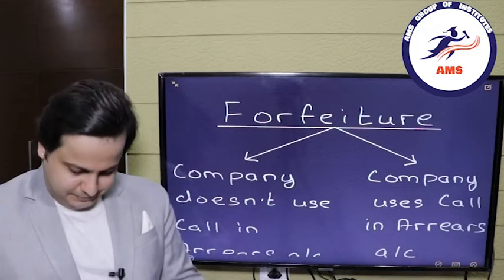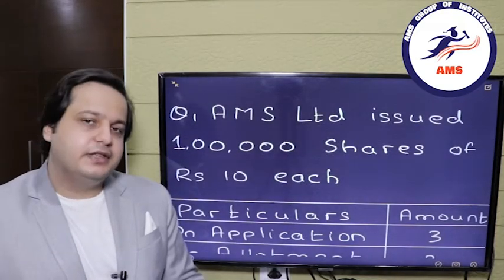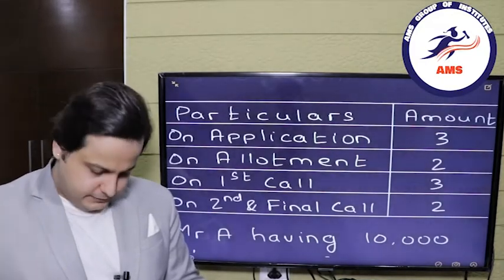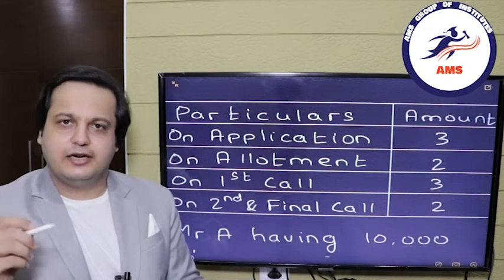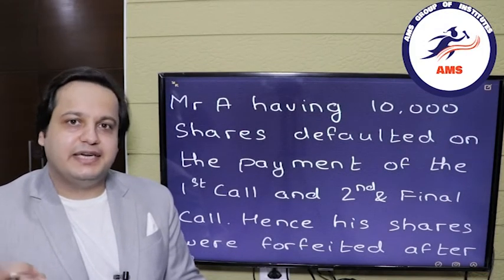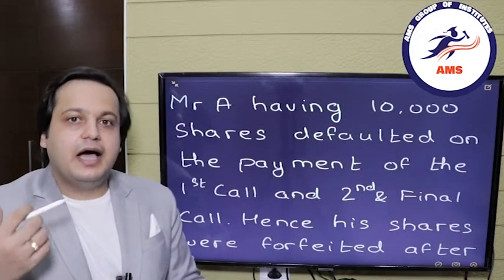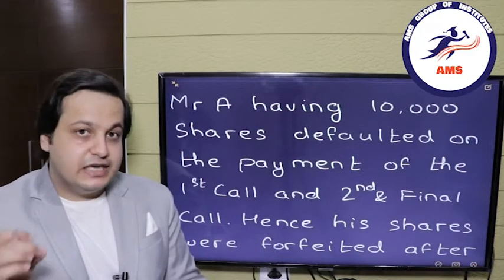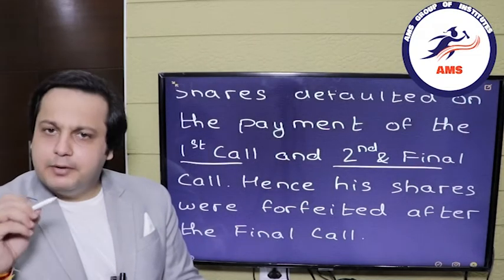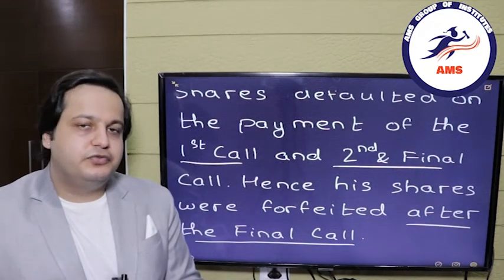Let's move forward with an example. AMS Limited has issued 1 lakh shares of rupees 10 each. The installments are: application ₹3, allotment ₹2, first call ₹3, and second and final call ₹2. Mr. A, having 10,000 shares, failed to pay the first and second and final call. Hence his shares were forfeited after the final call. He did not pay the first call and second and final call, and his shares were forfeited after the final call.